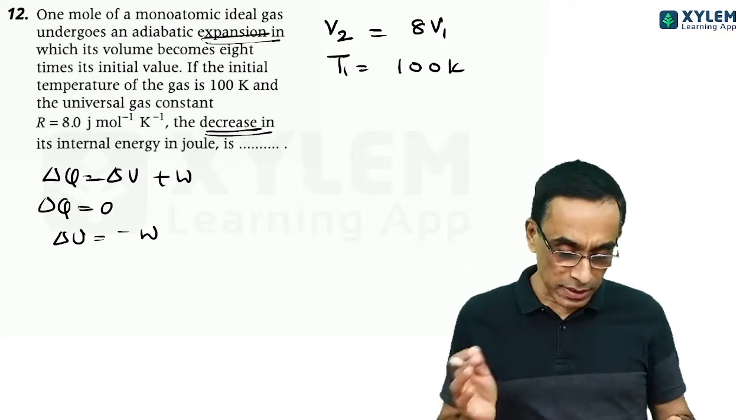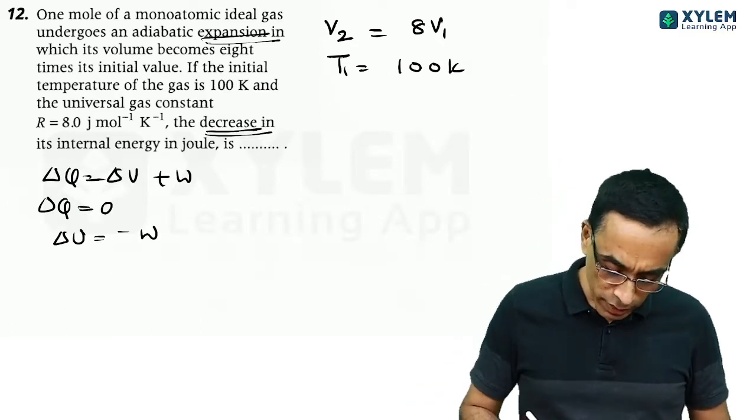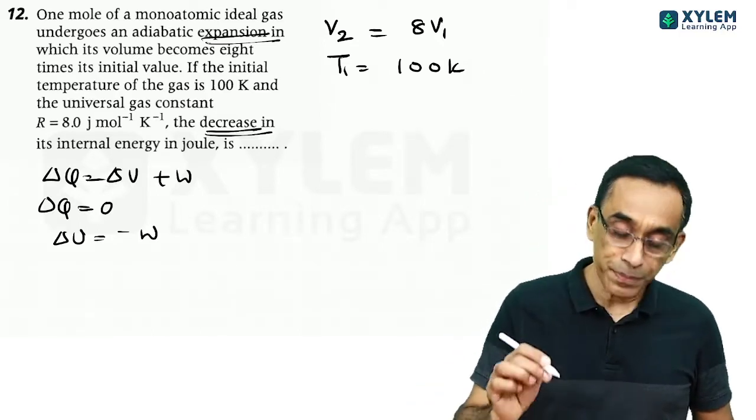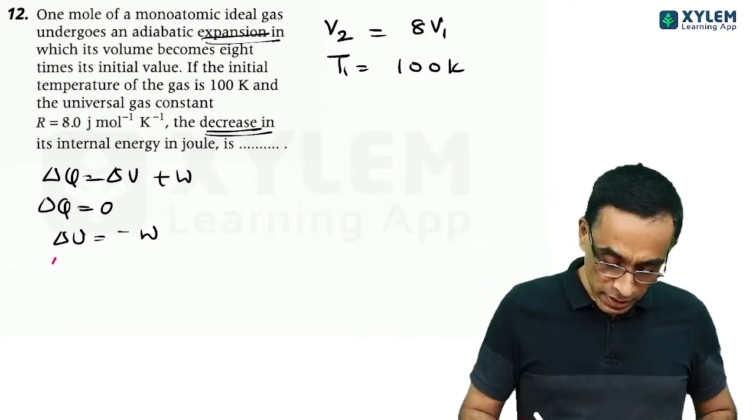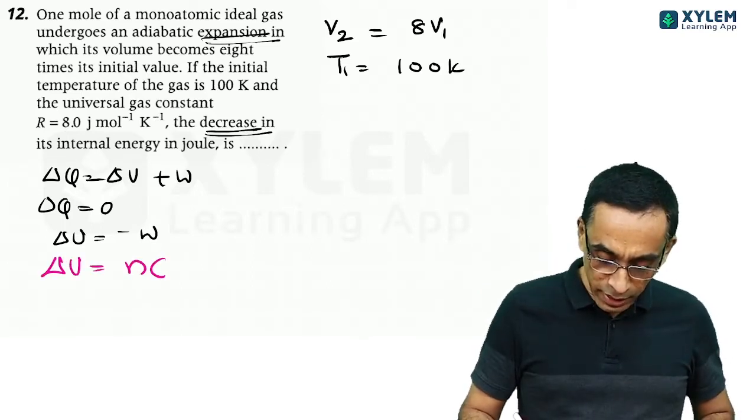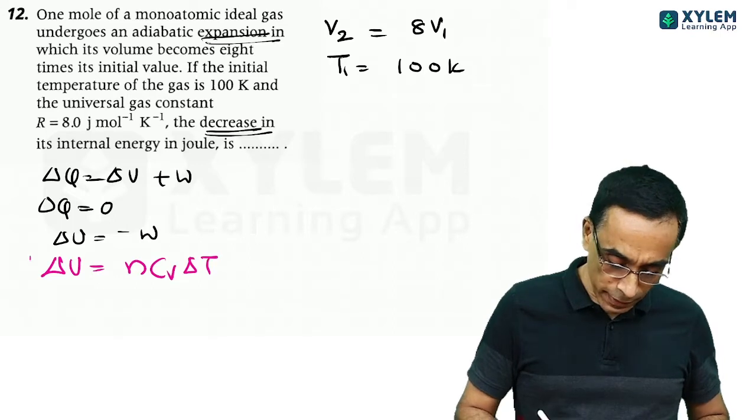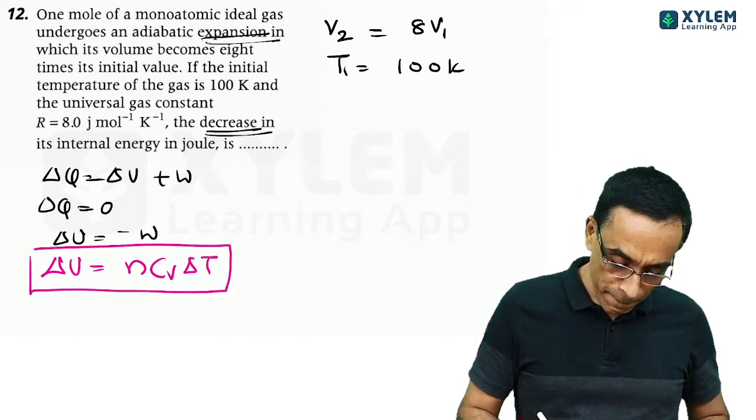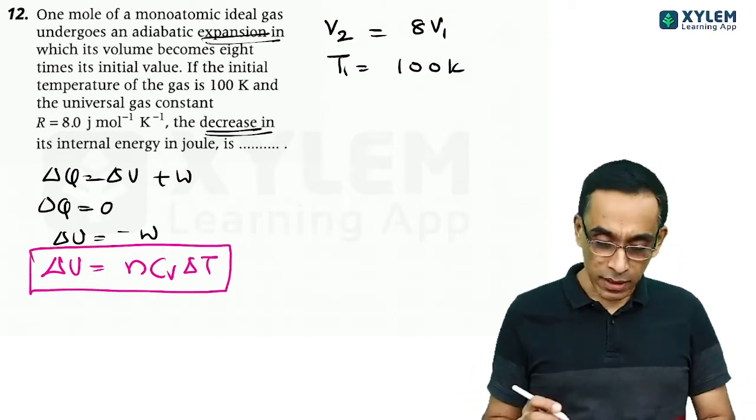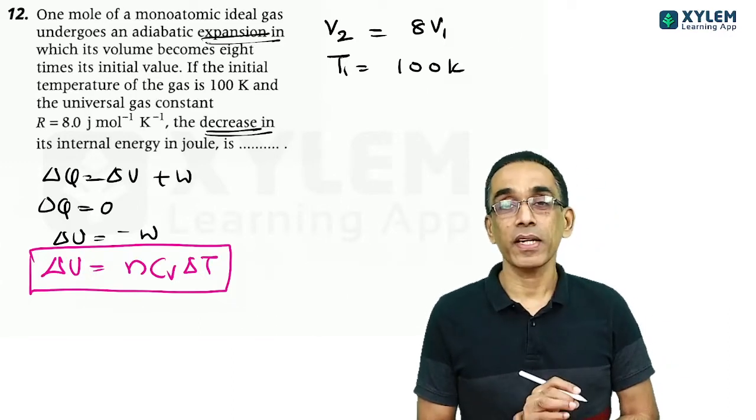That is why they use the word decrease in the internal energy. But don't worry, for any process, change in internal energy is given by nCvΔT.